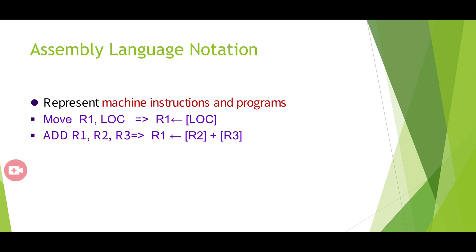For example, the RTN expression R1 ← [R2] + [R3] is represented in assembly language notation as: ADD R1, R2, R3. Here ADD is the opcode, R1 is the destination register, and R2 and R3 are the source operands. There are two notations for representing machine instructions: Register Transfer Notation (RTN) and assembly language notation.